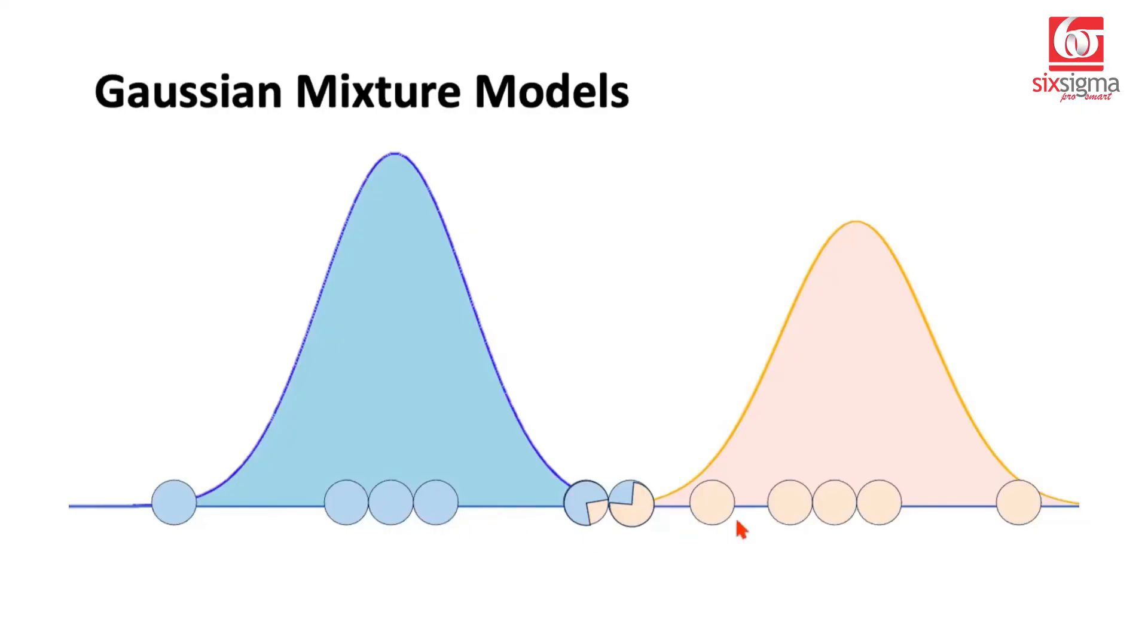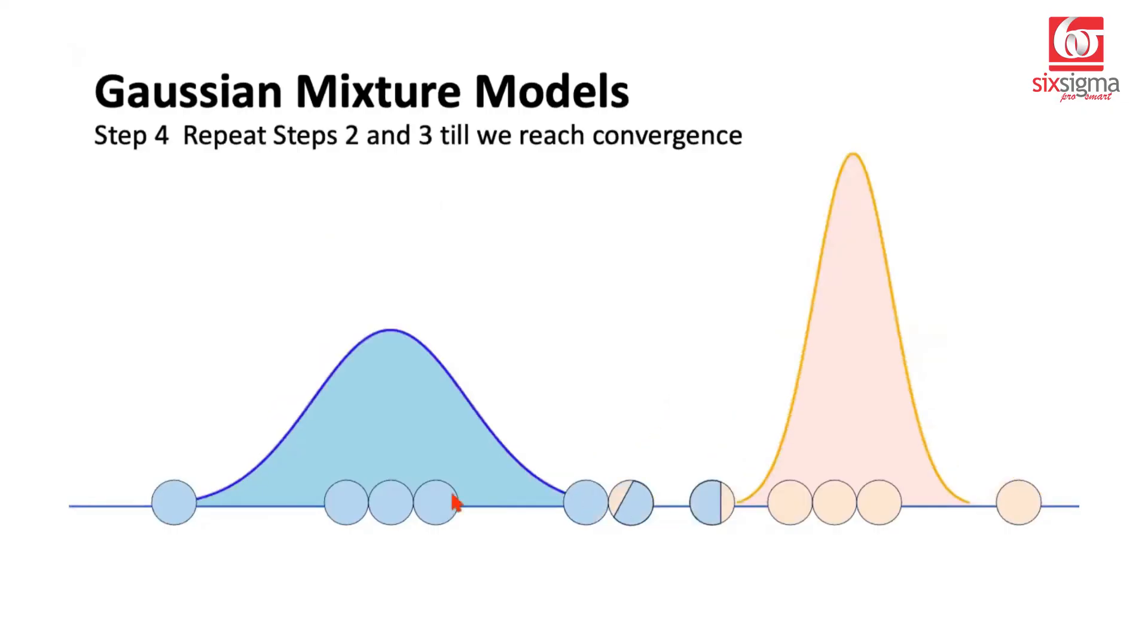And these steps of calculating the responsibility and revisiting the model parameters will be repeated. For example, you may end up getting this as the final output. At what stage do we stop? When do we say that we have converged or we have reached the end conclusion? When we do not see much change in the parameters for these Gaussian distributions. When we continue to repeat these steps, but beyond the point, the distributions don't really change significantly. We say that we have converged and that's how we will determine the clusters.